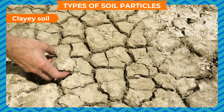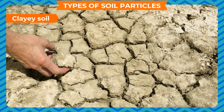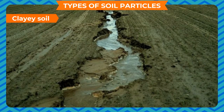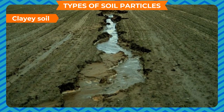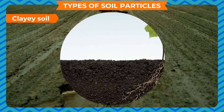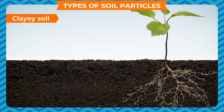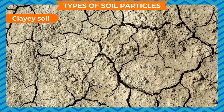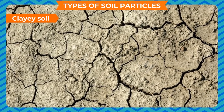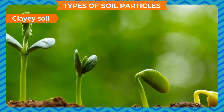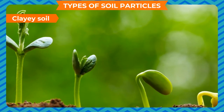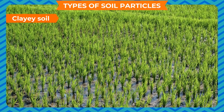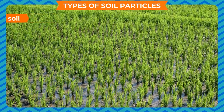Clay soil mostly contains clay. Water drains through very slowly since the particles are very small and tightly packed. It does not trap enough air for the roots of plants. It can hold water very well and is easily waterlogged. It is rich in minerals and is good for crops like paddy which require large amounts of water.